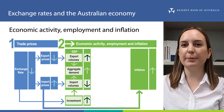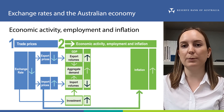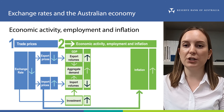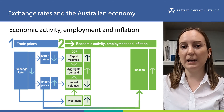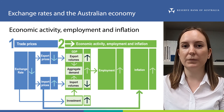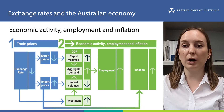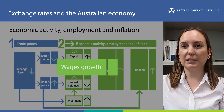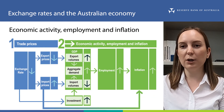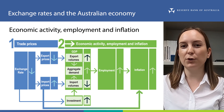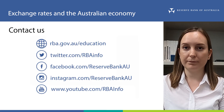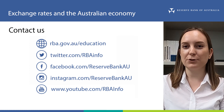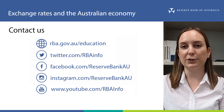To summarise, a depreciation in the exchange rate increases exports and lowers imports, and can affect financial flows in a way that increases investment. Together, these effects result in an increase in aggregate demand and GDP. Higher aggregate demand then leads to an increase in demand for labour, because greater production of goods and services requires more workers. This increase in employment can lead to a rise in workers' wages. Higher wages flow on to a general increase in prices, as goods and services cost more to produce and workers have more income to spend, so inflation will also increase. In the final video on exchange rates, we'll discuss what factors can drive changes in the Australian dollar.